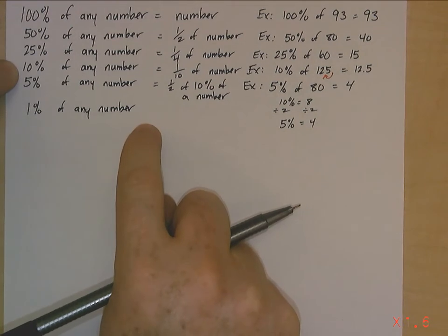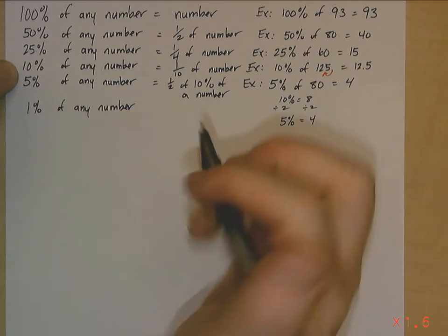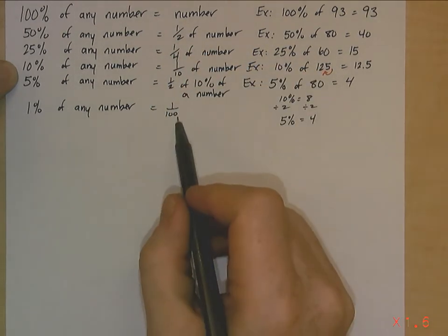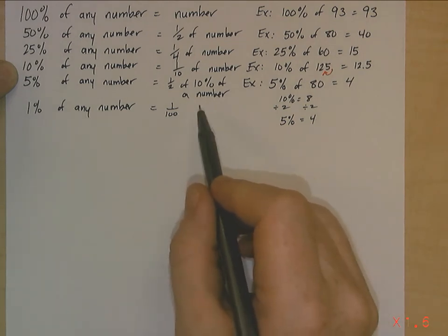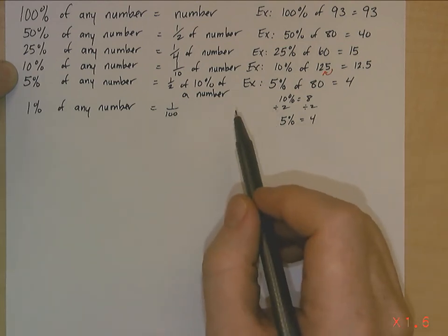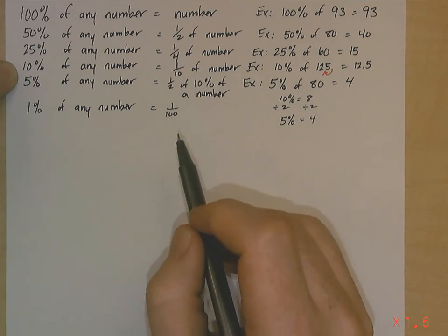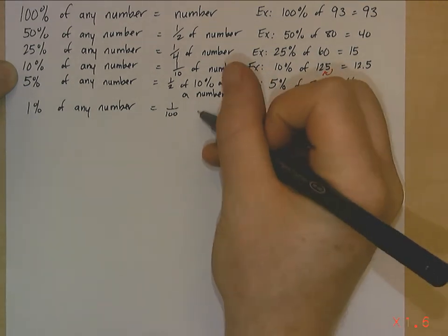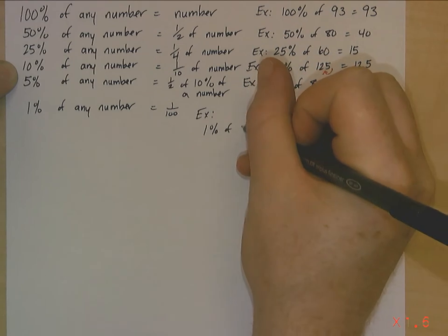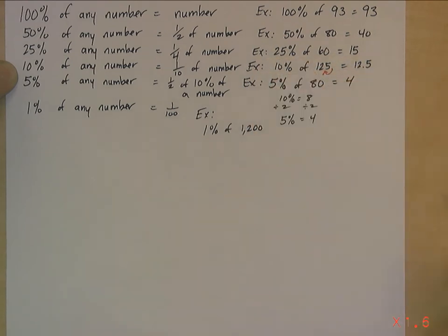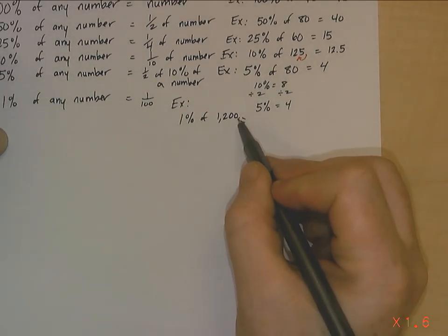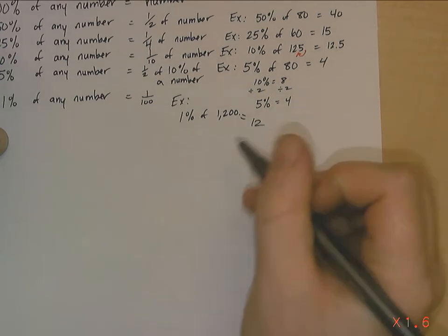And last but not least is 1% of any number is very similar to 10%. Instead of moving it to the left one time, you move it to the left two times. So 1%, if you remember as a fraction, is 1 over 100. Basically, you're dividing by 100. You see, there's two zeros. You're dividing by 100, so you're going to move it to the left two places. If you divide by 1,000, you move it to the left three places. If you divide by 10,000, you move it to the left four places. So example would be, say, I'm trying to find 1% of 1,200. Move it to the left two times. 1, 2 is going to be 12. That's 1%.